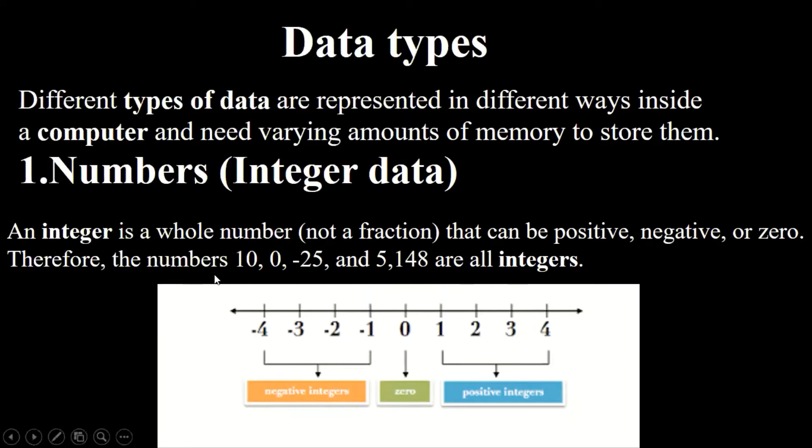An integer is a whole number, not a fraction, that can be positive, negative, or zero. Therefore the numbers, you can use any 10, 0, minus 25, 5148, all are integers. And in a picture we can see on the right side of the zero there are positive integers, and on the left side of the zero there are negative integers. So any kind of integer that is without fractional part or decimal part, that is called integer, a number in a computer. That is number data.